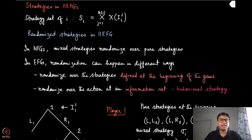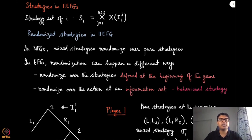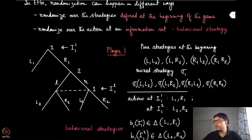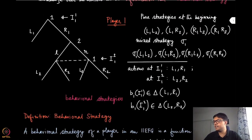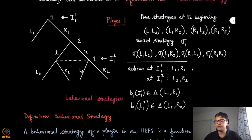In the case of imperfect information extensive form games, we will have to go for randomized strategies. And that randomization can happen in two different ways. So let us look directly at the example and try to see what is the difference between these two types of randomization.